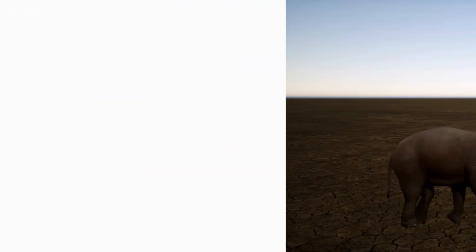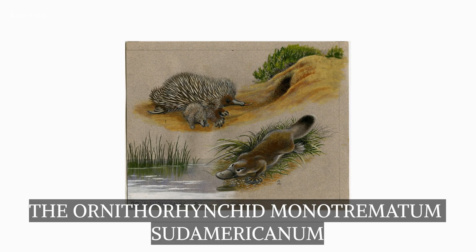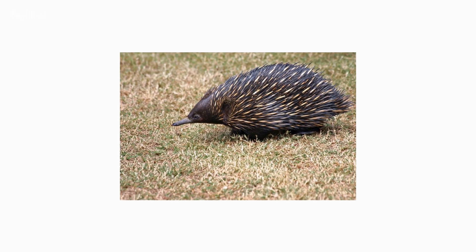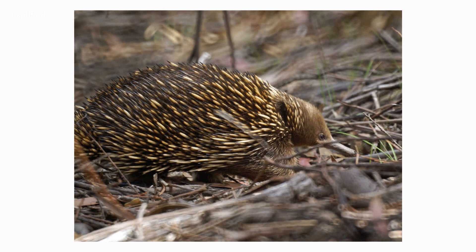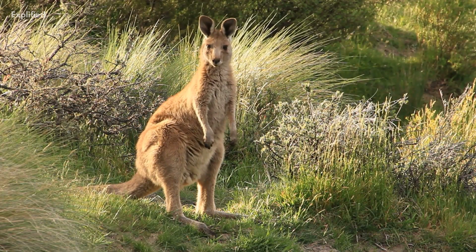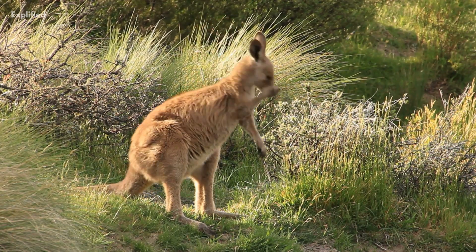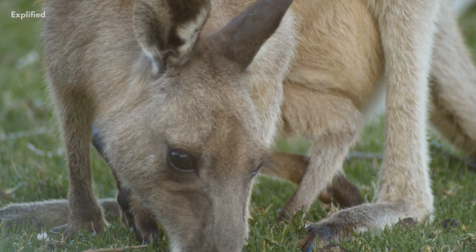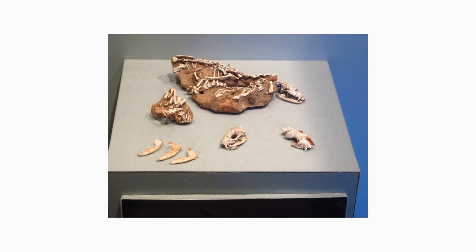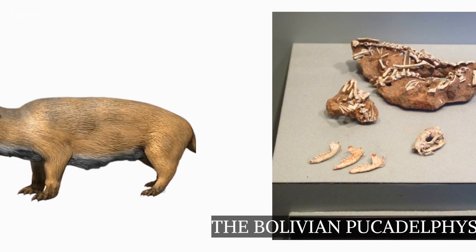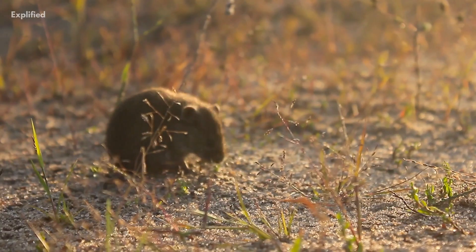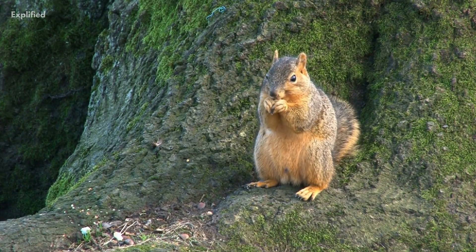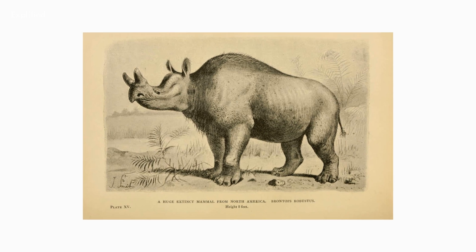Paleocene mammals include: first, monotremes — the Obdurodon or Ornithorhynchid Monotrematum sudamericanum belongs to the same family as the platypus and is the only Paleocene monotreme known. Second, marsupials — modern kangaroos are marsupials, distinguished by the fact that they give birth to embryonic young who crawl into the mother's pouch and feed until fully mature; a Paleocene example is the Bolivian Pucadelphys andinus. Third, multituberculates — this rodent-like grouping includes the Paleocene Anatolidon, and is the only major branch of mammals to have gone extinct since the Cretaceous-Paleogene boundary.